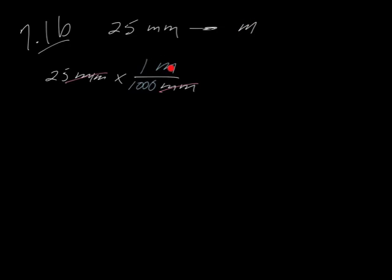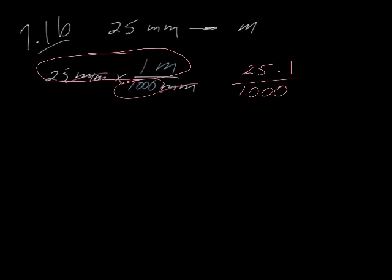So now what we have to do is we multiply our numerators, 25 times 1, and we divide it by whatever is on the bottom. In this case, it's just 1,000, so we have 25 divided by 1,000 gives us 0.025 meters for an answer.